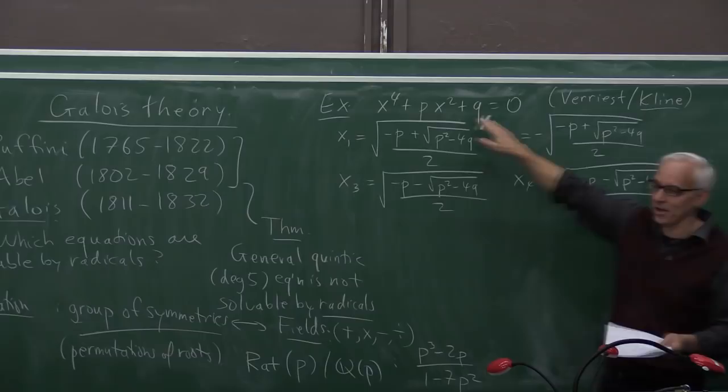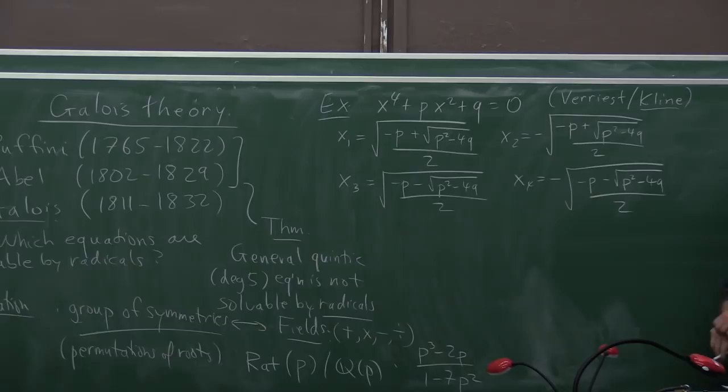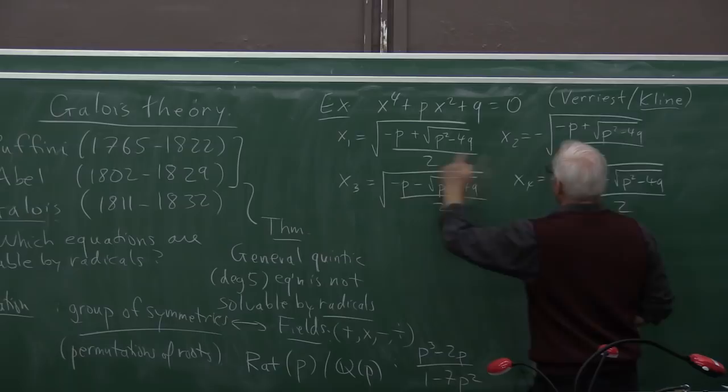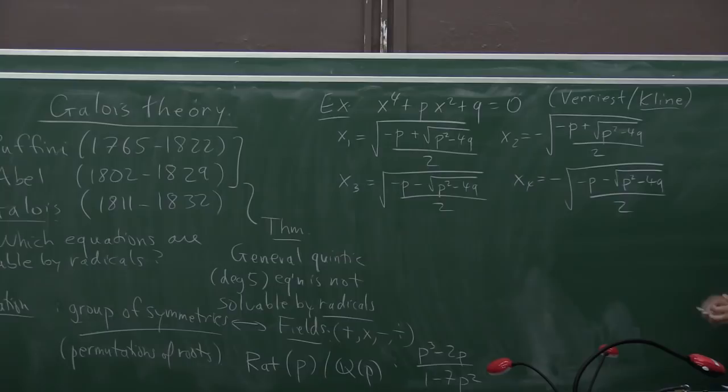Okay, so what we're doing is we're looking at a relatively simple equation, this fourth degree equation here. X to the fourth plus px squared plus q equals zero. The advantage is that it's really quadratic in x squared. So we can actually write down all the solutions. We can see what's going on in this case. Because you can solve the quadratic equation for x squared. That's basically what I've done inside here. And then you can take the square root of that, plus or minus square roots, to get four zeros.